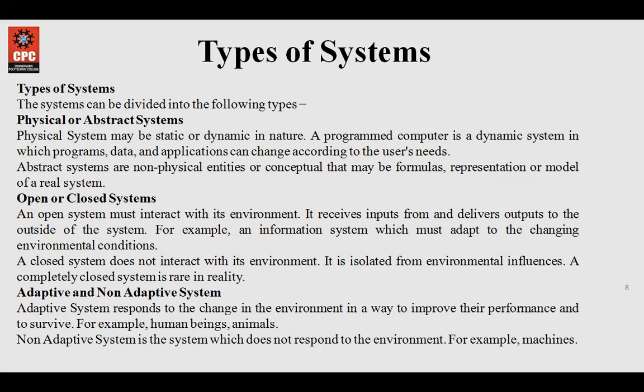Moving to open or closed systems: an open system receives inputs from other systems and delivers outputs to the outside — input is taken and output is given out. Any type of information system falls into this category as it must adapt to the changing demands of users. A closed system is the one that is isolated from environmental influences. In reality, a completely closed system does not exist — there is no system which will have no input and output movement across its boundaries.